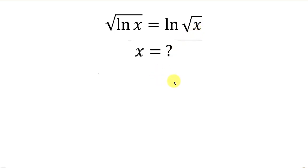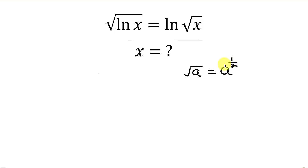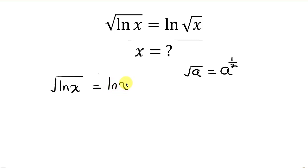Our first step is to know that the square root of a is the same as a to the 1 over 2. That means we're going to write the square root of x in this form. So on the left we have the square root of ln x equal to ln of x to the 1 over 2.